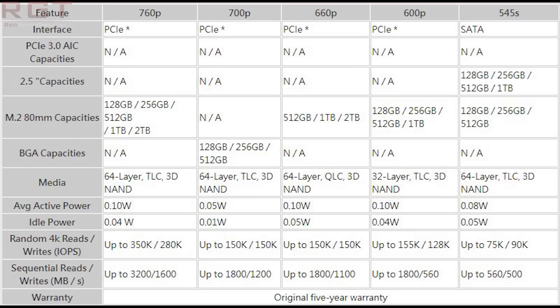The part you really care about — the random read and write speeds. For the 760p, that's up to 350,000 / 280,000 IOPS for read and write respectively. Sequential read and write speeds are 3,200 / 1,600 megabytes per second.